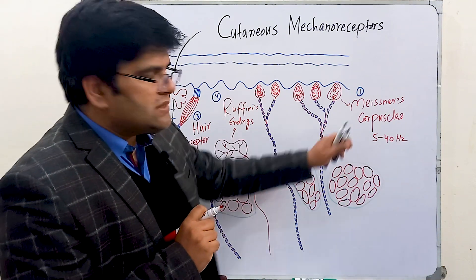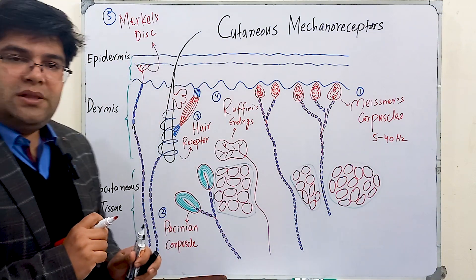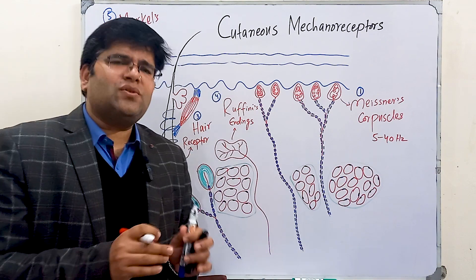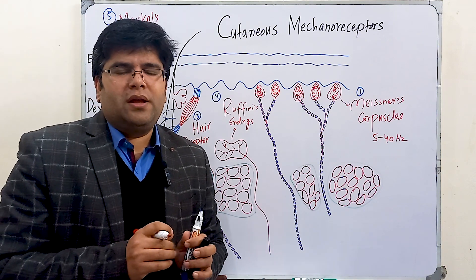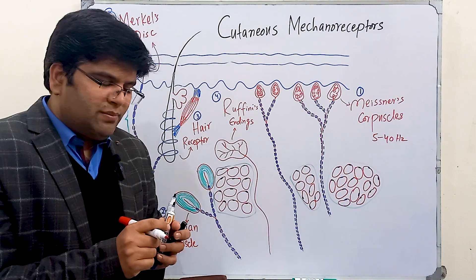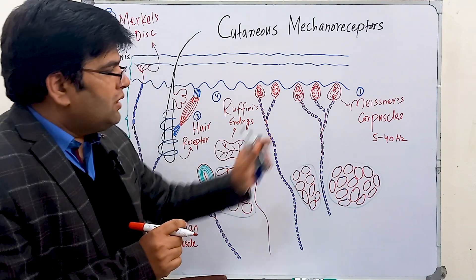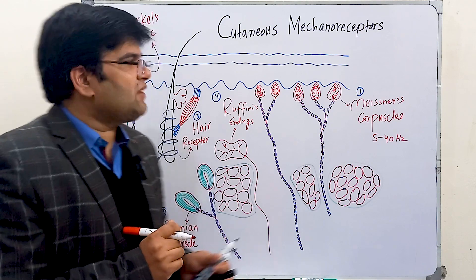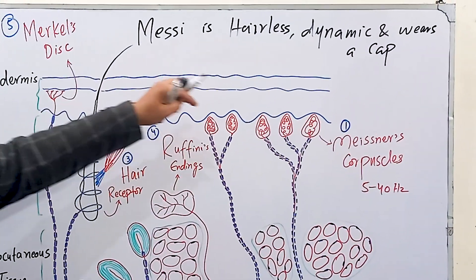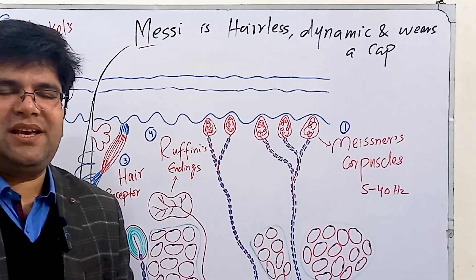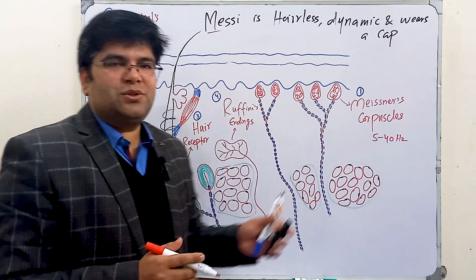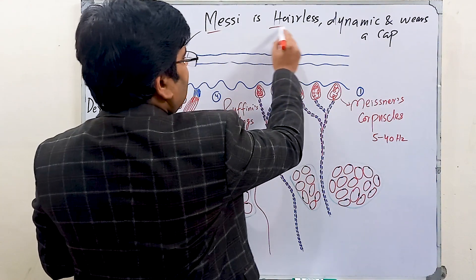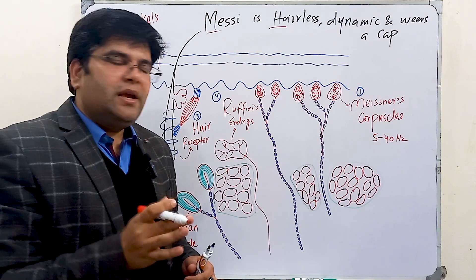The receptive field of Meissner's corpuscle is small, which means they are more abundantly present in the non-hairy skin. That's why they are very important for detecting two-point discrimination — two points placed very close can be detected as two separate points. The mnemonic to memorize features of Meissner's corpuscle is: 'Messy's hairless, dynamic, and wears a cap.' 'Messy' is for Meissner's corpuscle, 'hairless' because they are located in hairless skin of the palms, soles, and lips.